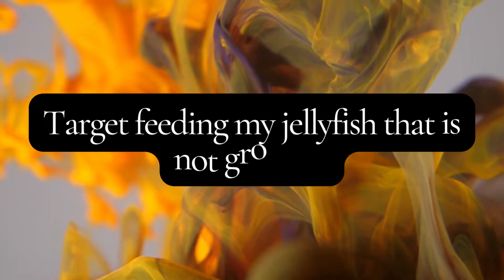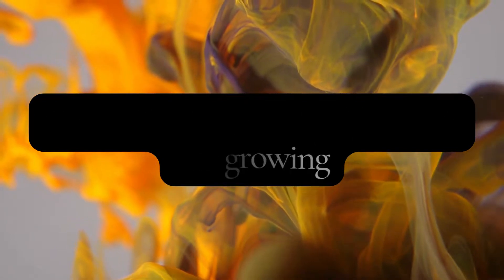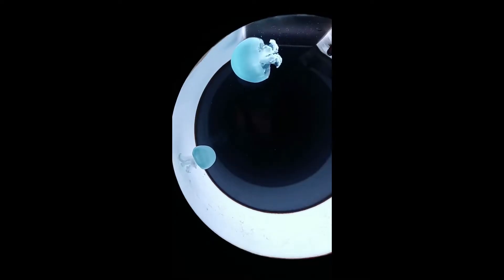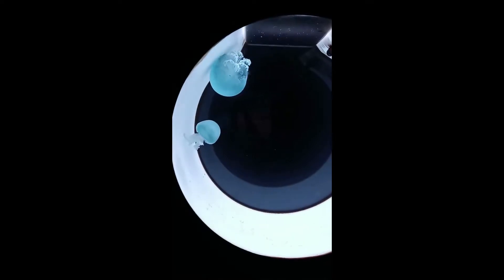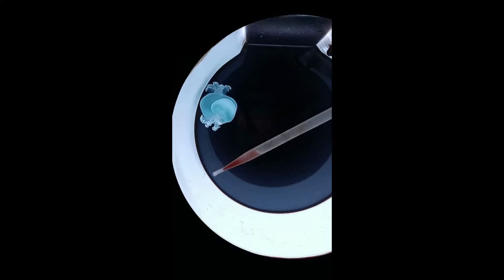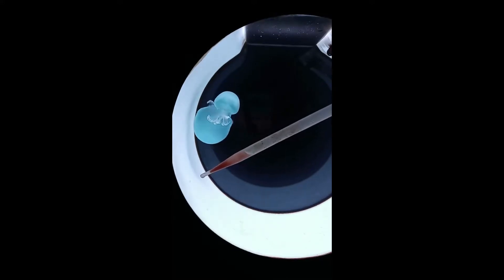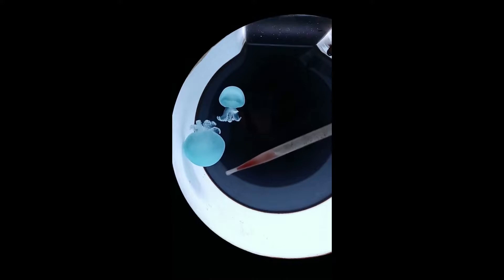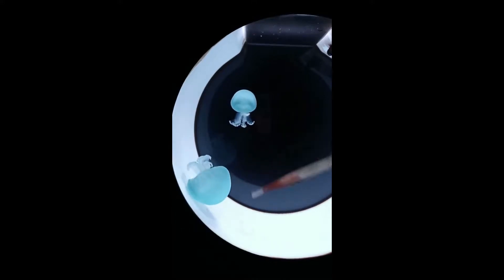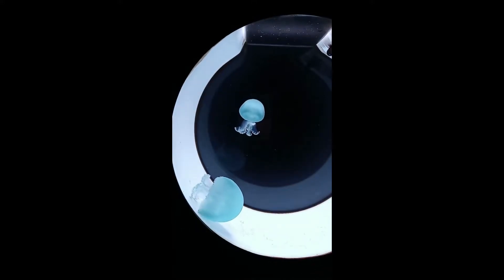What I do is use regular fresh-hatched brine shrimp. I put them in my pipette, and when I put the pipette in, I make sure that some is getting to the smaller jellyfish. Let me show you what that looks like.